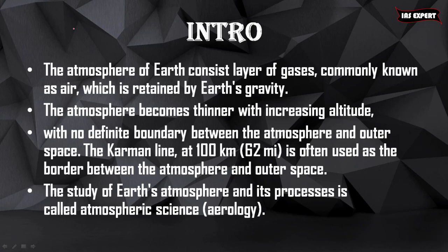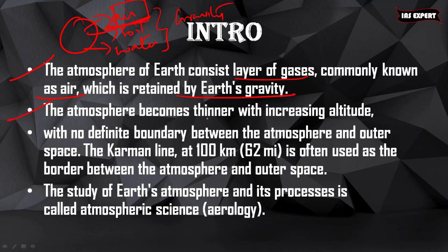Introduction. We all know that earth is made up of soil, water and air. Today we are talking about the composition of air. The atmosphere of earth consists of a layer of gases, which is commonly known as air and which is retained by its gravity. The air, water and soil is retained by gravity. The atmosphere becomes thinner with increasing altitude, so the level of oxygen decreases with increasing altitude. With no definite boundary between atmosphere and outer space, the Karman line at 100 kilometers from its surface is often used as the border between atmosphere and outer space.